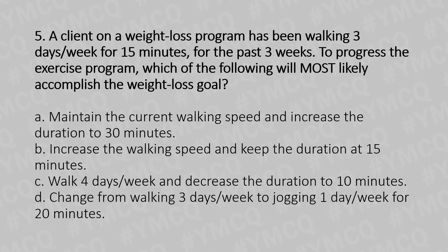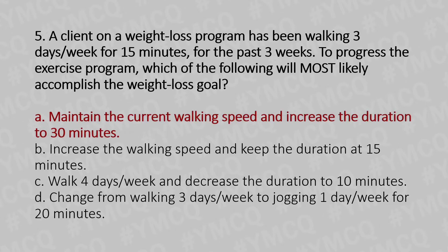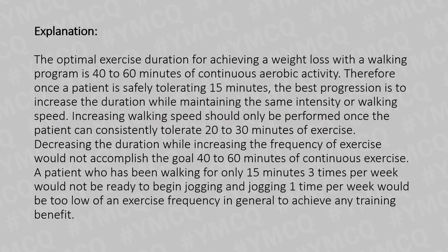And the answer is Option A: Maintain the current walking speed and increase the duration to 30 minutes. Explanation: The optimal exercise duration for achieving weight loss with a walking program is 40 to 60 minutes of continuous aerobic activity. Therefore, once a patient is safely tolerating 15 minutes, the best progression is to increase the duration while maintaining the same intensity or walking speed. Increasing the walking speed should only be performed once the patient can consistently tolerate 20 to 30 minutes of exercise.